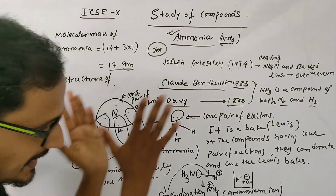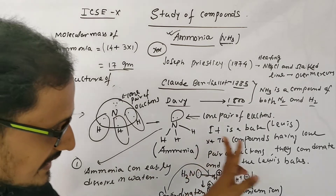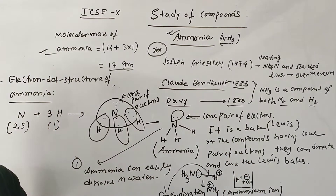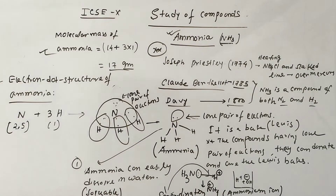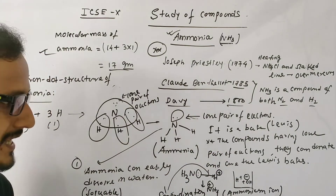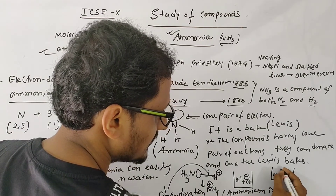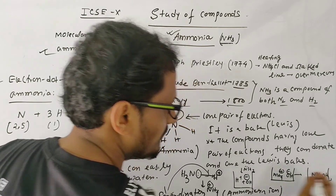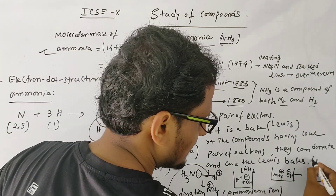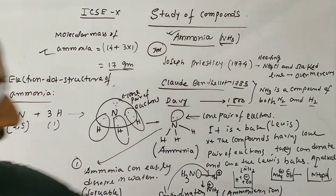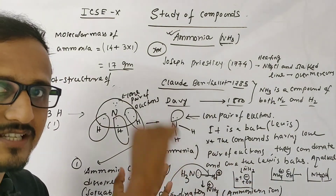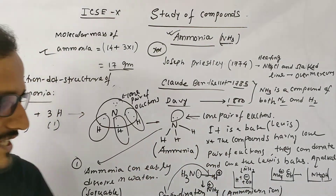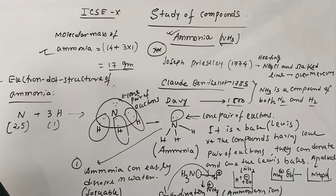When ammonia dissolves in water, we get NH4+ and OH− in solution, which is nothing but ammonium hydroxide. Ammonium hydroxide is a base with OH− ion. So ammonium hydroxide is prepared by dissolving ammonia in water, and ammonium hydroxide is simply the solution of ammonia — also called liquid ammonia.